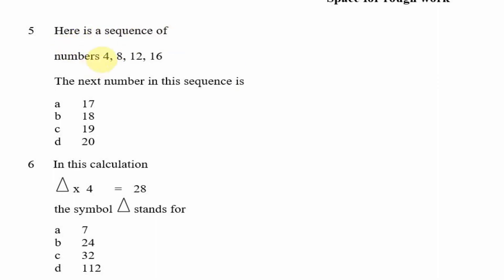Question 5: Here is a sequence of numbers — 4, 8, 12, 16. What is the next number? Each time we're going up by 4: 4+4=8, 8+4=12, 12+4=16. So the next number will be 16+4, which is 20. That is option D.